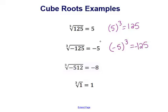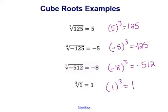The cube root of negative 512 equals negative 8, because negative 8 cubed equals negative 512. And the cube root of 1 equals 1, because 1 cubed equals 1. Notice the signs always match: cubing a positive gives a positive, and cubing a negative gives a negative, so pay attention to the sign when taking a cube root.